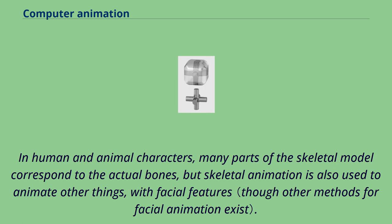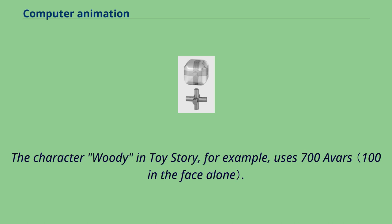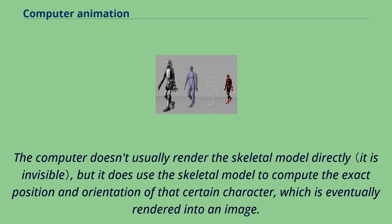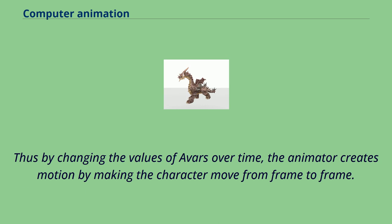In human and animal characters, many parts of the skeletal model correspond to the actual bones, but skeletal animation is also used to animate other things, including facial features. The character Woody in Toy Story, for example, uses 700 AVARs. The computer doesn't usually render the skeletal model directly, but uses it to compute the exact position and orientation of the character, which is eventually rendered into an image. By changing the values of AVARs over time, the animator creates motion by making the character move from frame to frame.